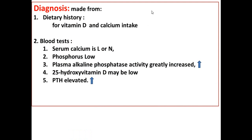Diagnosis is made from dietary history of vitamin D, calcium, and phosphorus intake. Special tests include serum calcium, phosphorus, alkaline phosphatase, vitamin D level, 25-hydroxy vitamin D, and parathyroid hormone. Calcium is initially low, but after parathyroid hormone stimulation it returns to normal. Phosphorus remains low even after PTH stimulation. Alkaline phosphatase is greatly increased. Vitamin D level may be low, and parathyroid hormone is elevated.